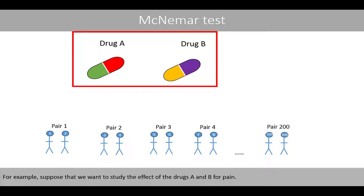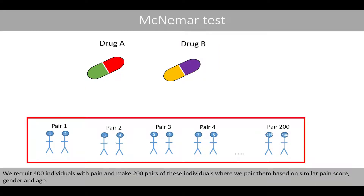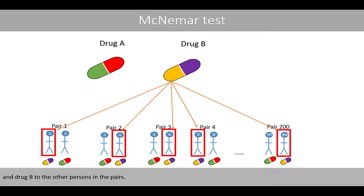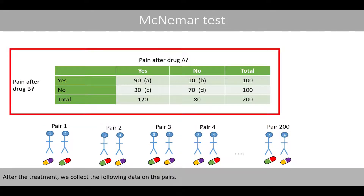For example, suppose that we want to study the effect of drugs A and B for treating pain. We recruit 400 individuals with pain and make 200 pairs of these individuals, where we pair them based on similar pain score, gender, and age. We then randomly assign drug A to one of the individuals in the pairs, and drug B to the other persons in the pairs. After the treatment, we collect the following data on the pairs.